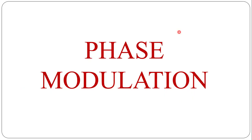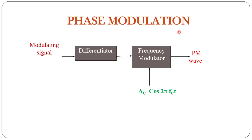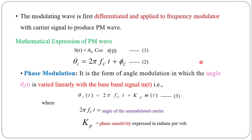In this video we will discuss phase modulation. The phase modulated wave is usually generated when the message signal (the modulating signal) is differentiated, and the differentiated modulating signal is passed through a frequency modulator. The carrier signal is given as the input, generating the PM wave.